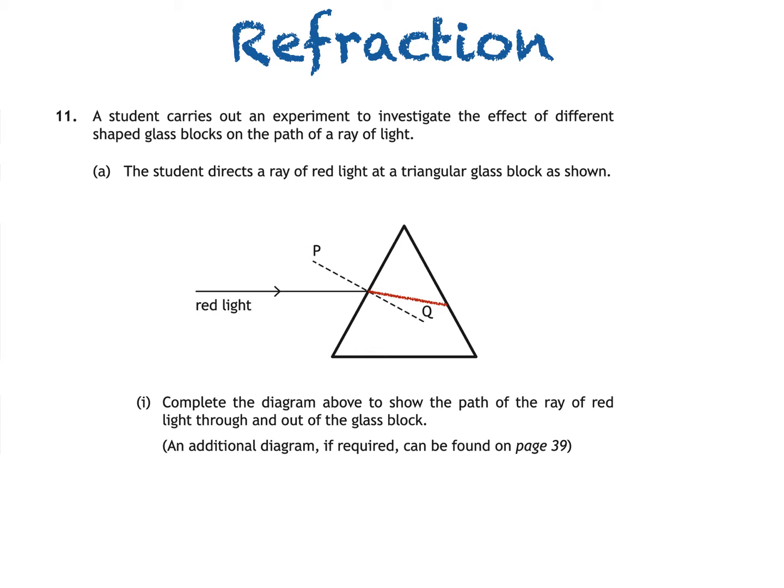First of all, I'll draw another normal at the point where the ray of light strikes the second surface. Again, this isn't the answer. It's just showing what would happen if there was no refraction at the second surface. This time though, the ray of light is passing from glass to air, a less optically dense material, so the light speeds up and bends away from the normal like this.